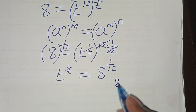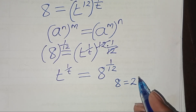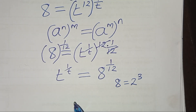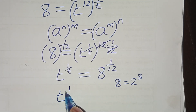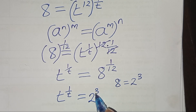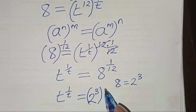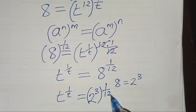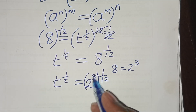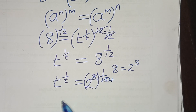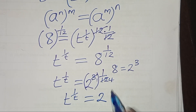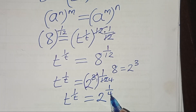Simplifying further, we have t to the power (1 over t) is equal to 2 to the power 3, multiplied by 1 over 12. This simplifies to t to the power (1 over t) is equal to 2 to the power (1 over 4).